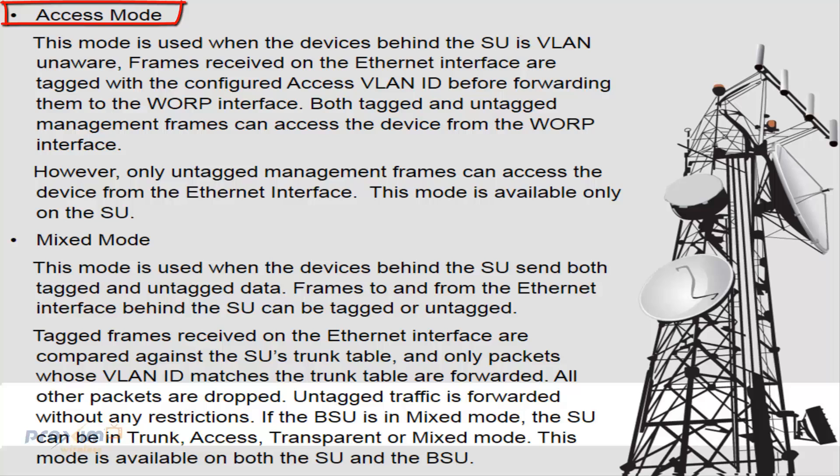Access mode is used when the device behind the SU is VLAN unaware. Frames received on the Ethernet interface are tagged with the configured access VLAN ID before forwarding them to the Warp interface. Both tagged and untagged management frames can access the device from the Warp interface. However, only untagged management frames can access the device from the Ethernet interface. This mode is available only on the SU.